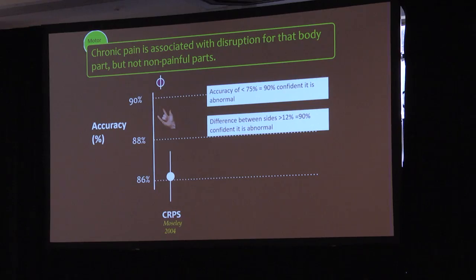In CRPS, if your accuracy is worse than 75%, you can be confident that's abnormal. The difference between sides has to be 12% to be sure there really is a difference between sides. This is for CRPS.